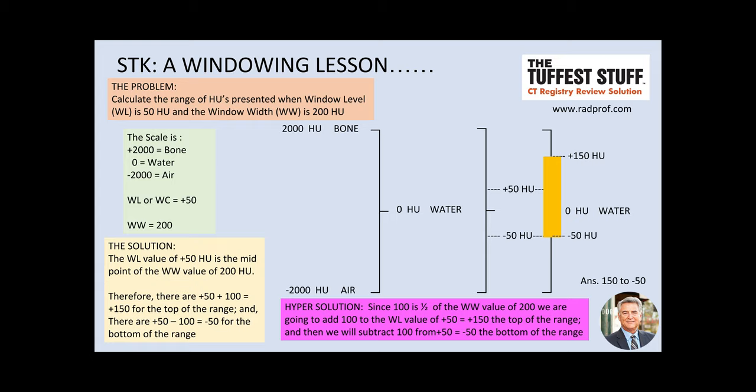Let's take a look at the hyper solution. Since 100 is one half of the window width value of 200, we are going to add 100 to the window level value of positive 50, which equals positive 150 and establishes the top of the range. Then we subtract 100 from positive 50, which equals negative 50 and establishes the bottom of the range. The answer is 150 to negative 50.